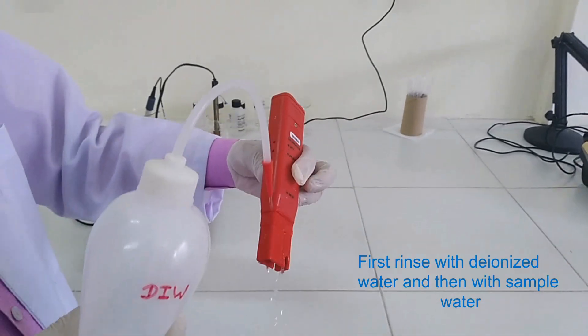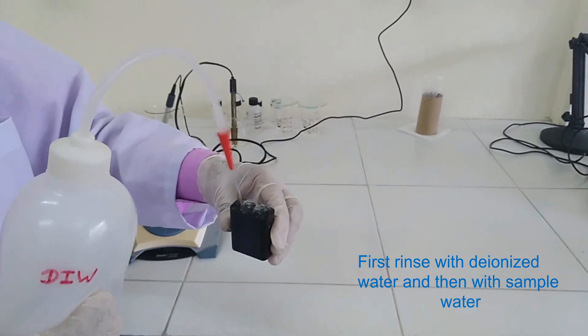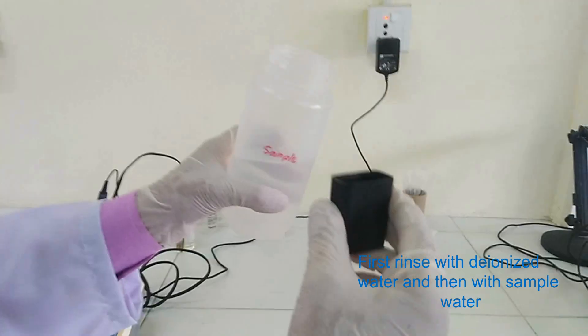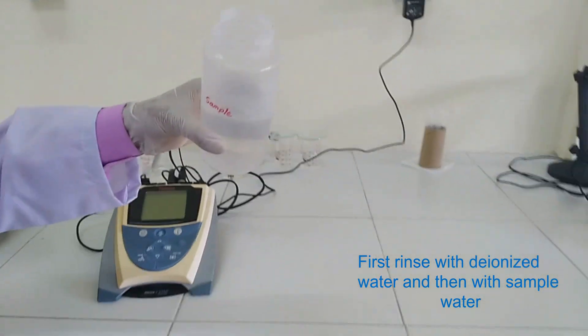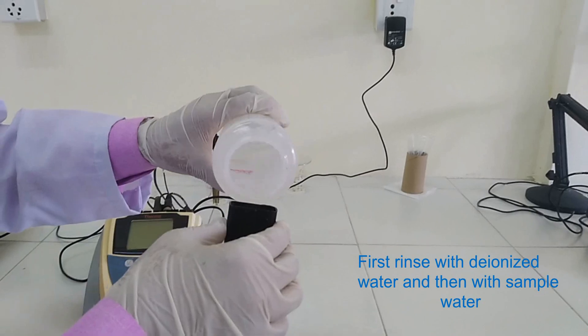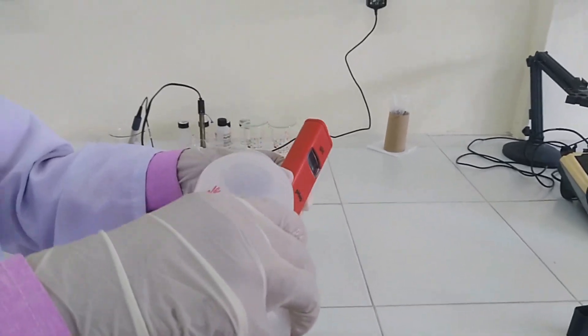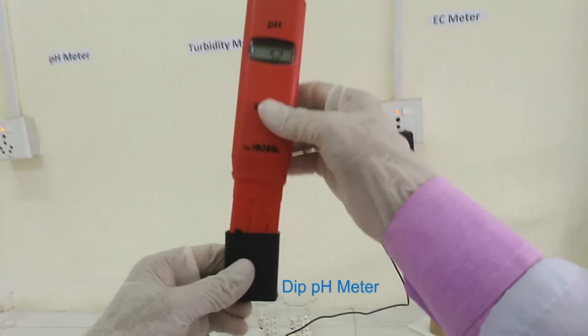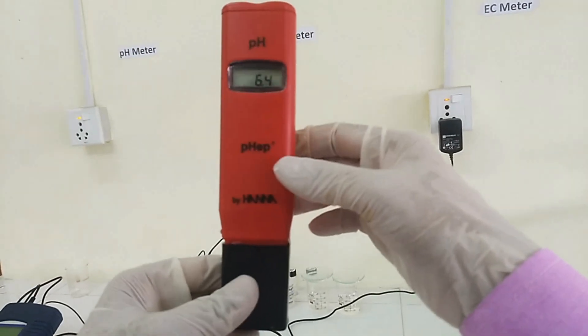After calibration, switch off the instrument first. Then to measure the pH of water sample, first rinse pH meter and cap properly by deionized water and then rinse with sample water. Take water sample in cap and dip the pH meter. Wait for a stable value.